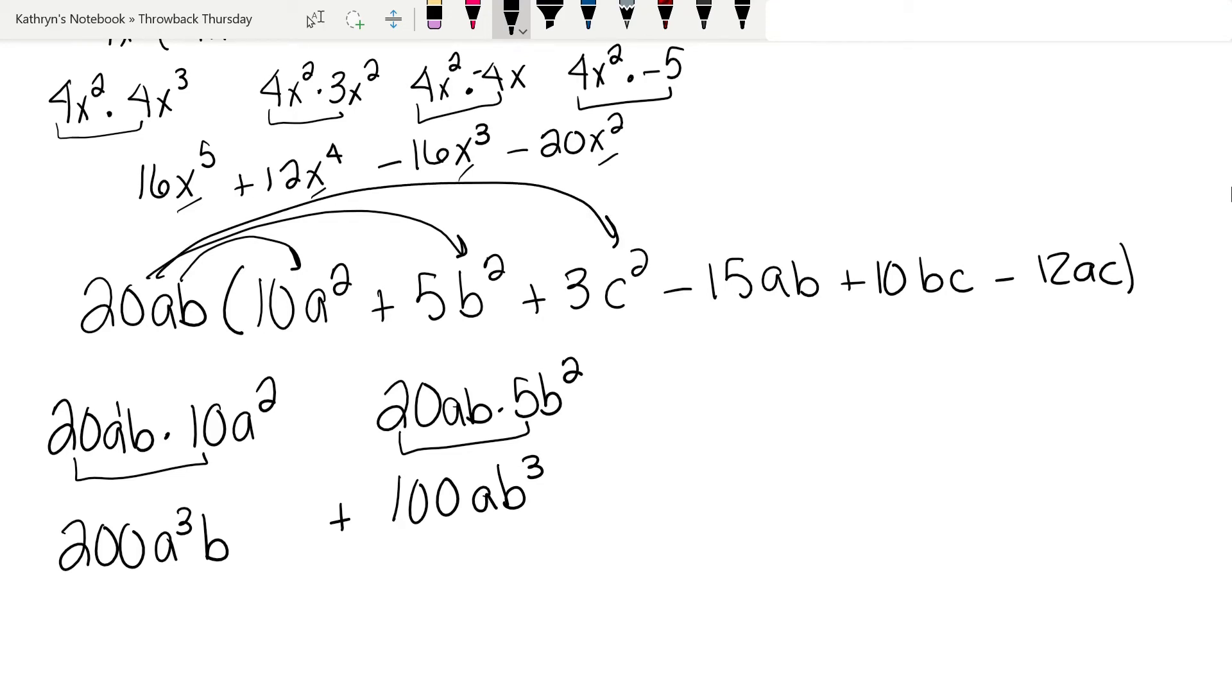The next one is 20ab times 3c². So 20 times 3 is 60. And now none of them have the same base, so it is going to be abc². We're going to do the next one.